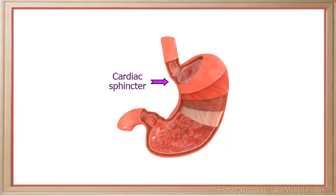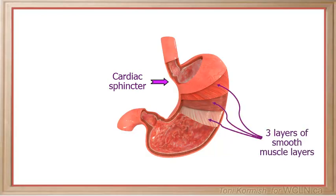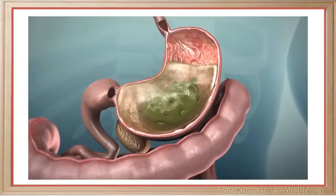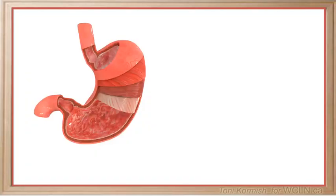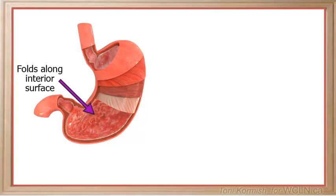It begins at the cardiac sphincter, which controls the flow of materials coming into the stomach. The stomach is composed of three layers of smooth muscle, which are primarily responsible for mixing material that has come into the stomach with digestive enzymes and moving that material through the stomach by peristalsis. The muscular walls of the stomach are folded, which allows the stomach to expand as food enters.